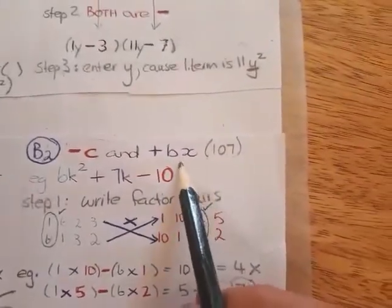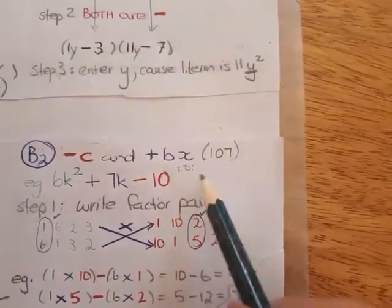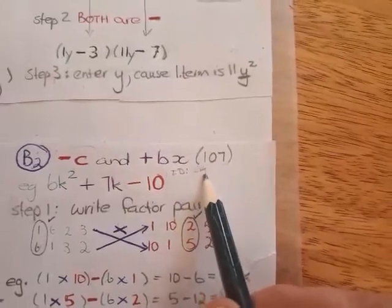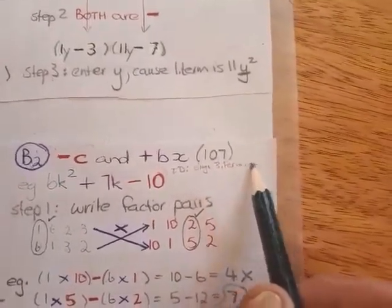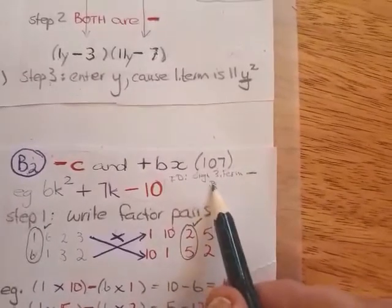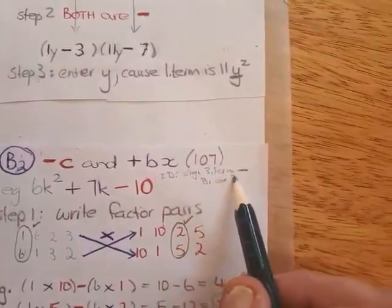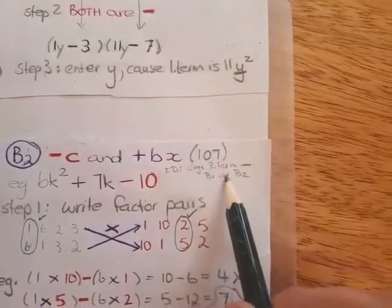Remember I said to you that's where you start your identification. You look at the sign of the third term. If it is negative, then it is either B1 or B2. That's your first identification.